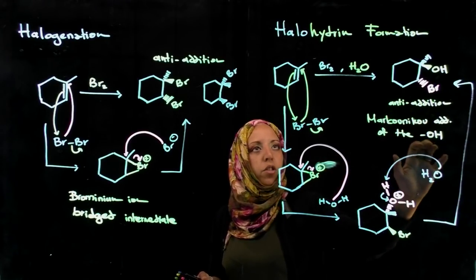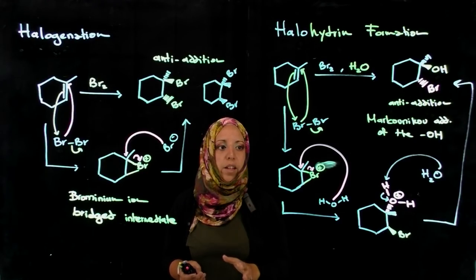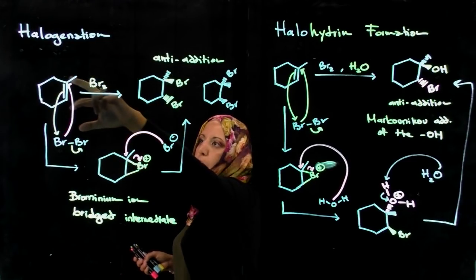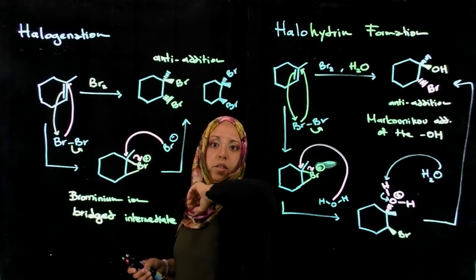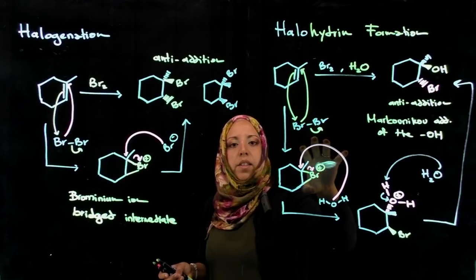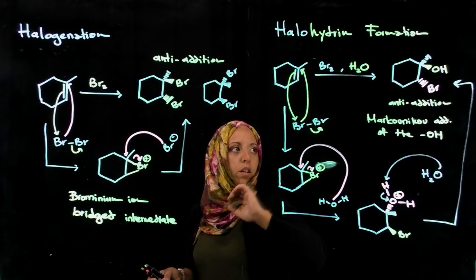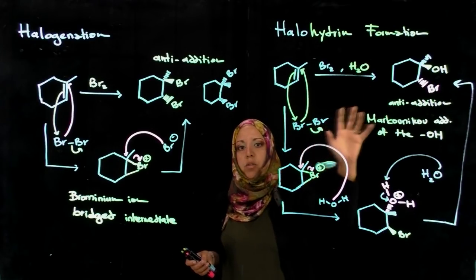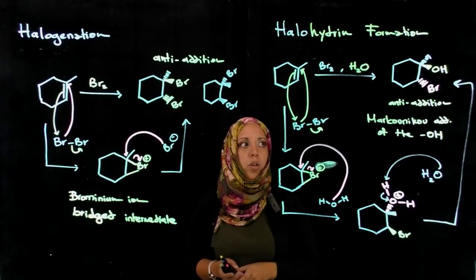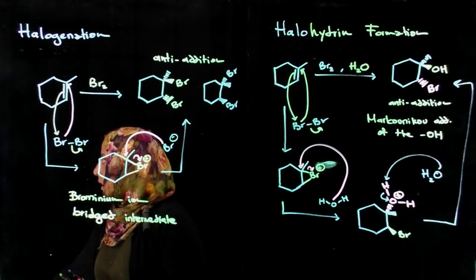It's a Markovnikov addition of the alcohol group. Halogenation and halohydrin formation are very similar. If it's just the halogen, we're adding two halogens across a carbon-carbon double bond and it's an anti-addition. If it's a halohydrin, you're using water as well, and in the second step the nucleophilic attack happens using water. It's still an anti-addition, but the alcohol group adds to the more substituted position of that carbon-carbon double bond. I hope this was helpful. Thank you.